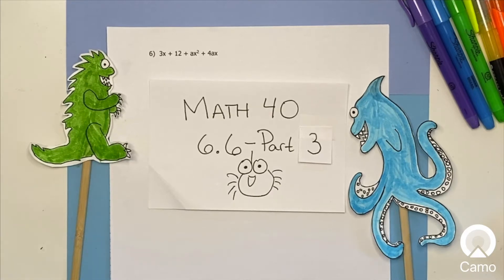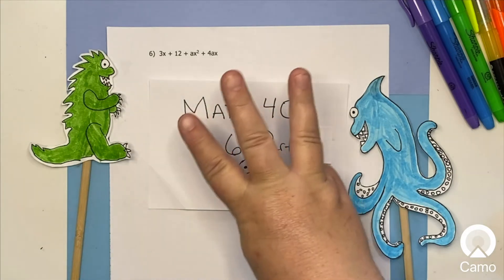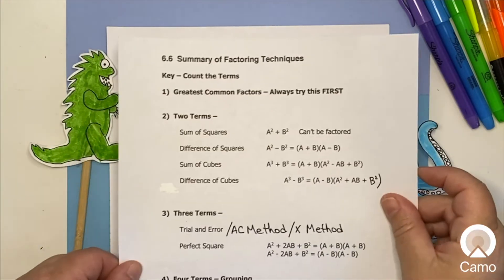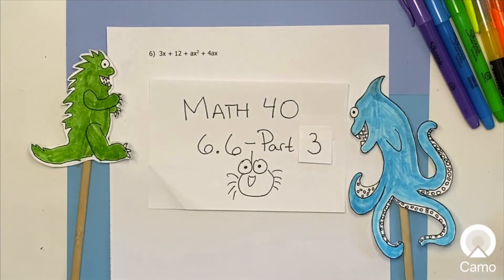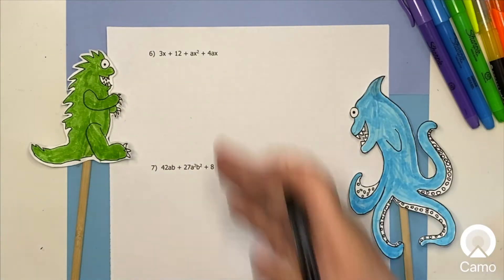This is part 3 of factoring techniques. The other two parts got too long, so we've got two more examples to go over, and they're both right here. No surprises — number seven is that one, but don't worry about it right now. Let's just focus on number six.